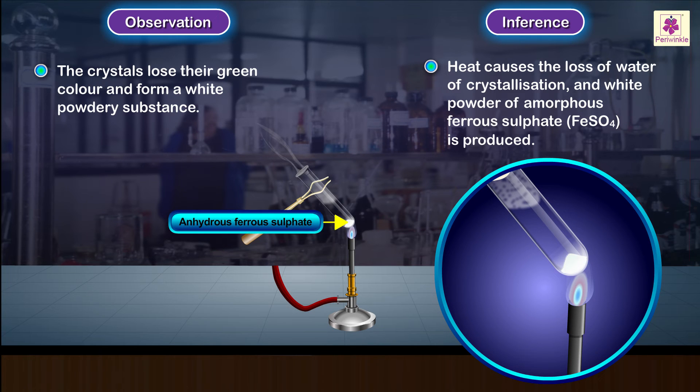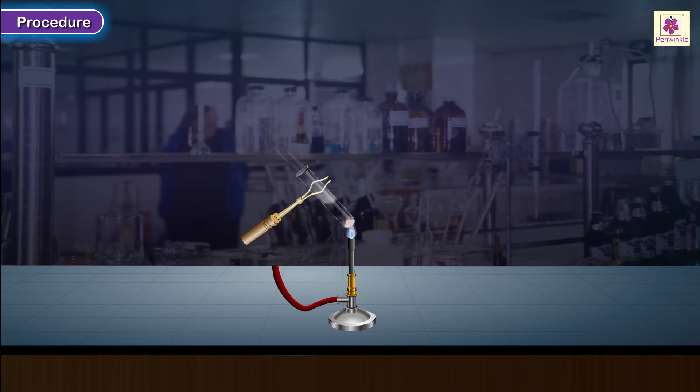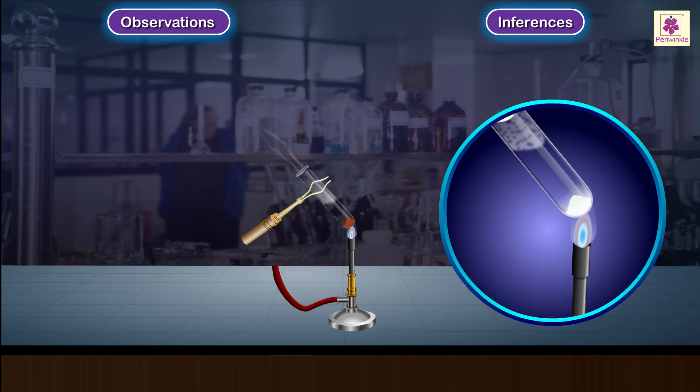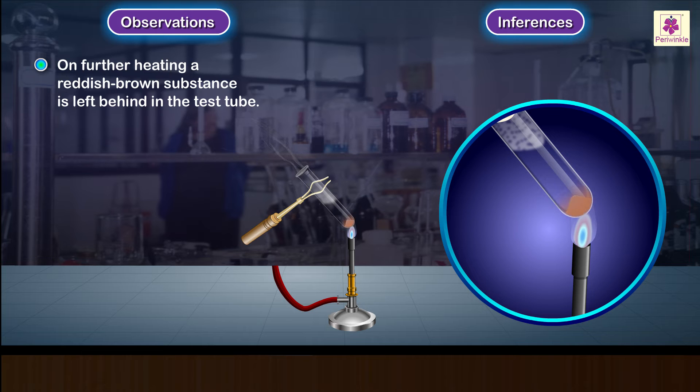Procedure: Strongly heat the crystals. Observations and inferences: On further heating, a reddish-brown substance is left behind in the test tube.